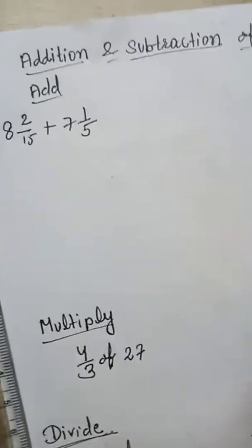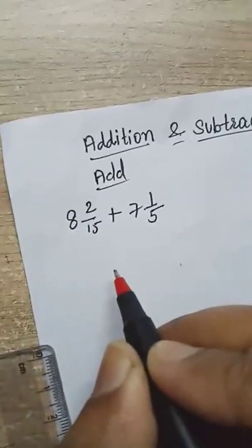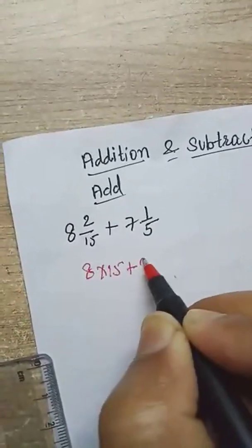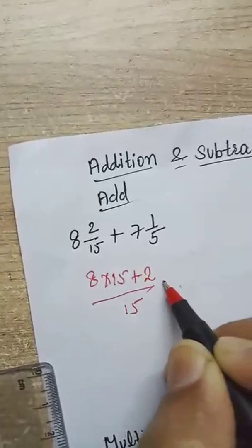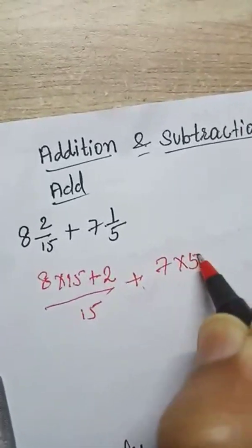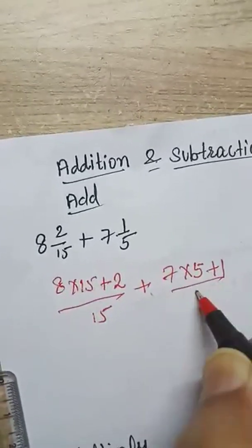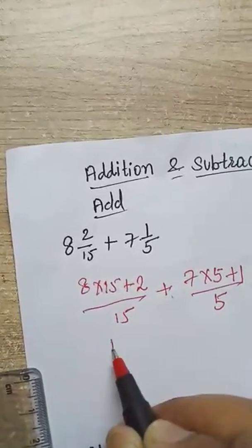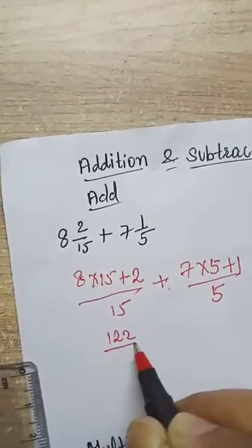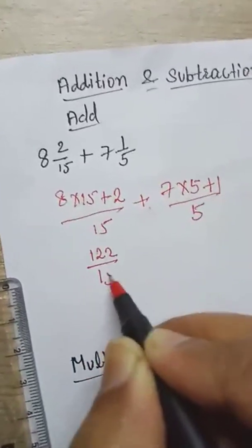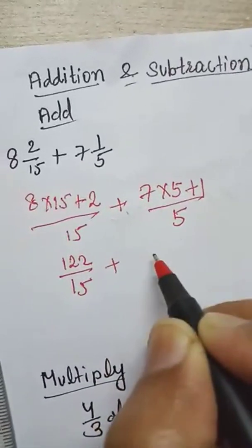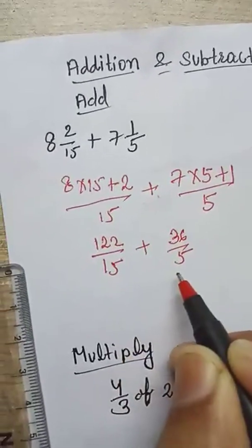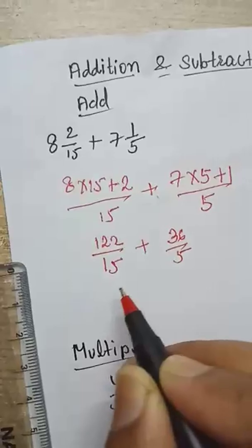So how to convert: look here — 8 multiply 15 plus 2, upon 15, plus 7 multiply 5 plus 1, upon 5. So 8 times 15 is 120, plus 2 gives 122 upon 15. And 7 times 5 is 35, plus 1 gives 36 upon 5. The denominators are different, so first of all find the LCM.